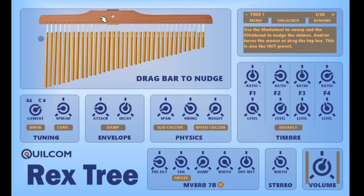You can use the mouse to click and drag on the bar at the top to juggle all of them randomly.